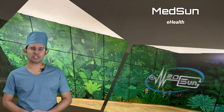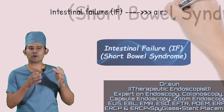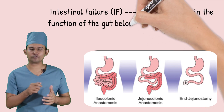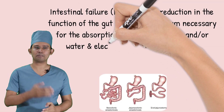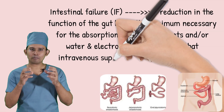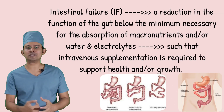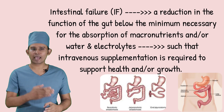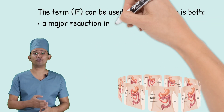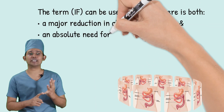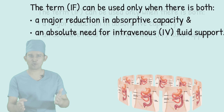Hello and welcome. Today I'm going to talk about Short Bowel Syndrome. First, let's look at intestinal failure, which is defined as a reduction in the function of the gut below the minimum necessary for the absorption of macronutrients and/or water and electrolytes, such that intravenous supplementation is required to support health and/or growth. The term intestinal failure can be used only when there is a major reduction in absorptive capacity and an absolute need for intravenous fluid support.